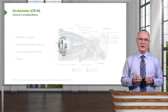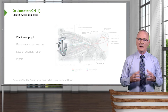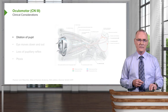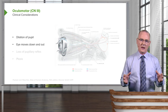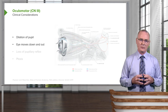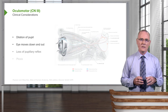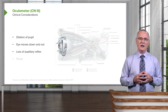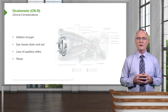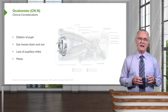Some clinical considerations for the oculomotor nerve: a lesion of this nerve can lead to dilation of the pupil, since it is no longer able to constrict it. Because of the numerous extraocular muscles it innervates, partial paralysis or full paralysis causes the eye to move down and out. There is an associated loss of the pupillary reflex, and because the levator palpebrae superioris can no longer contract, there is a drooping of the upper eyelid, termed ptosis.